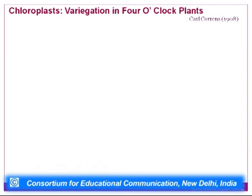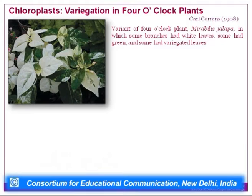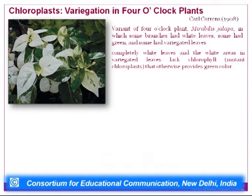Now let us look at inheritance mechanisms of these organelles and how they affect phenotype. The first example is chloroplast inheritance in variegation of four o'clock plants, Mirabilis jalapa. Some branches had white leaves, some had green, and some had patches of both — variegated. This was explained by Karl Correns in 1908. The completely white leaves and white areas in variegated leaves lacked chlorophyll. The white portions in variegated leaves resulted from a mutation in the chloroplast, resulting in absence of chlorophyll, and thus the phenotype was exhibited.